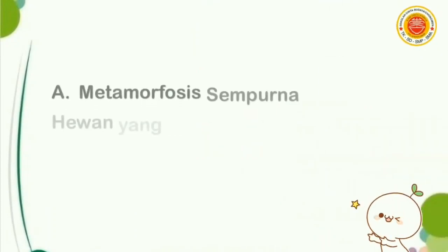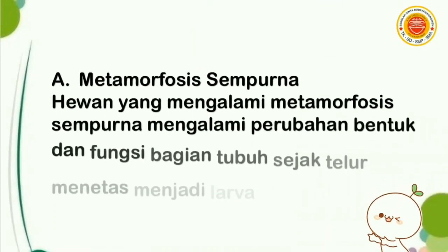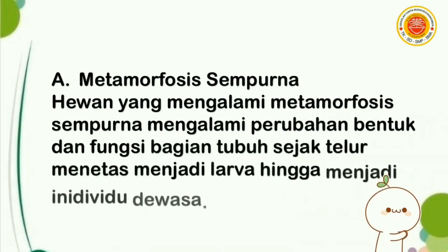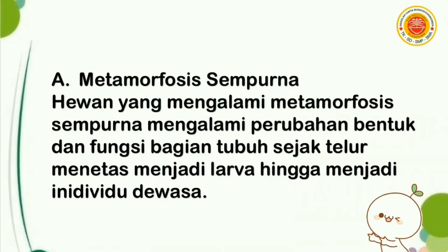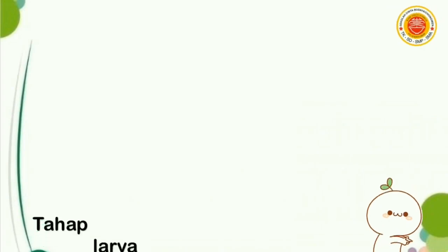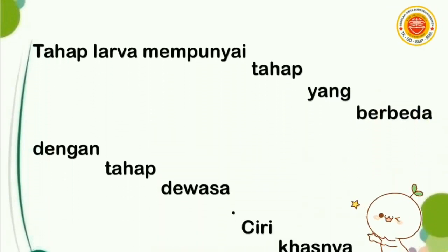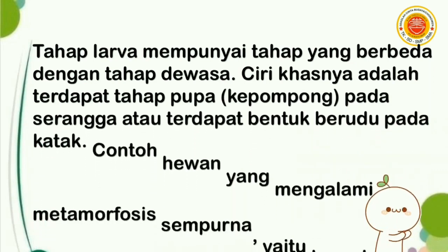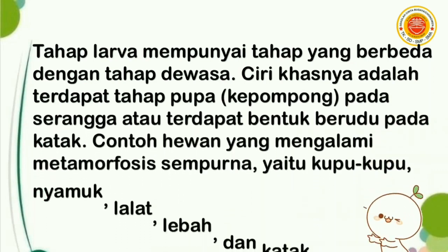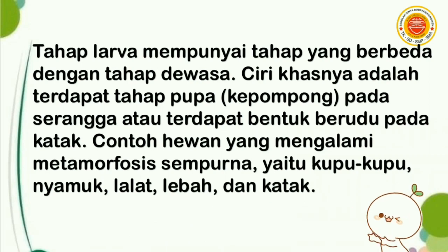Pada bagian A, membahas metamorfosis sempurna. Hewan yang mengalami metamorfosis sempurna mengalami perubahan bentuk dan fungsi bagian tubuh sejak telur menetas menjadi larva hingga menjadi individu dewasa. Tahap larva mempunyai tahap yang berbeda dengan tahap dewasa. Ciri khasnya adalah terdapat tahap pupa atau kepompong pada serangga, atau terdapat bentuk berudu pada katak. Contoh hewan yang mengalami metamorfosis sempurna yaitu kupu-kupu, nyamuk, lalat, lebah, dan katak.